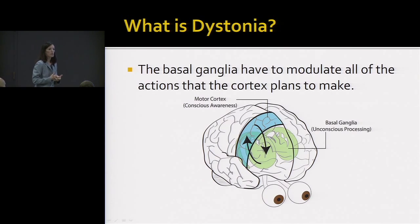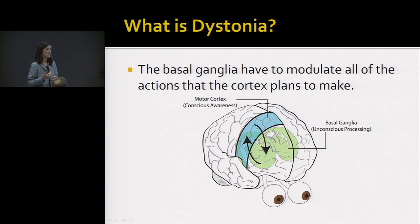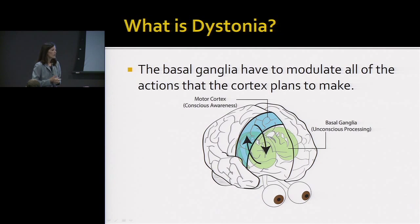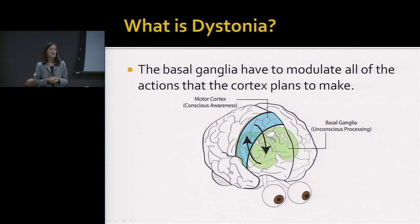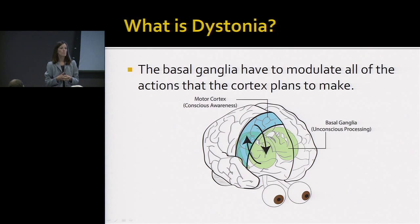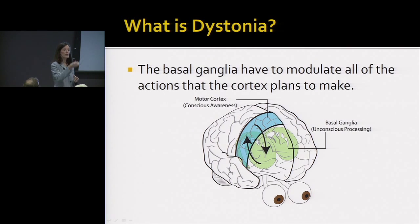The basal ganglia — the deep part of the brain — have to modulate or process all of the actions that the cortex, or what you might think of as the conscious brain, wants to make. For example, if your conscious brain wants to reach out and grab a cup of coffee in front of you, that's all you really have to think about. It's the basal ganglia that do all the processing: how fast are we going to reach for it? How smooth is that movement going to be? And once we get to the cup, how hard are we going to grab it and how much strength are we going to use to lift it?